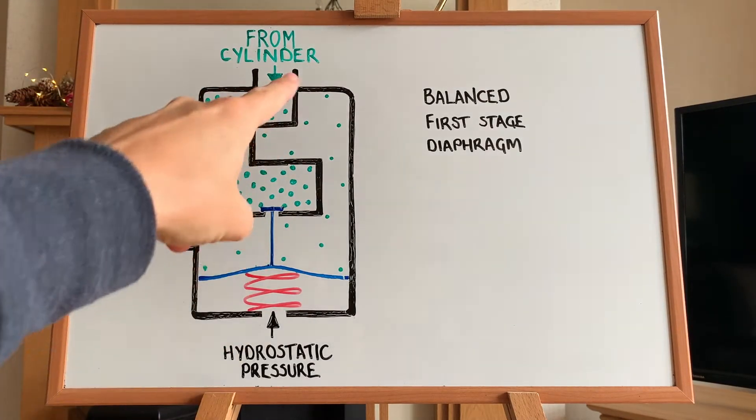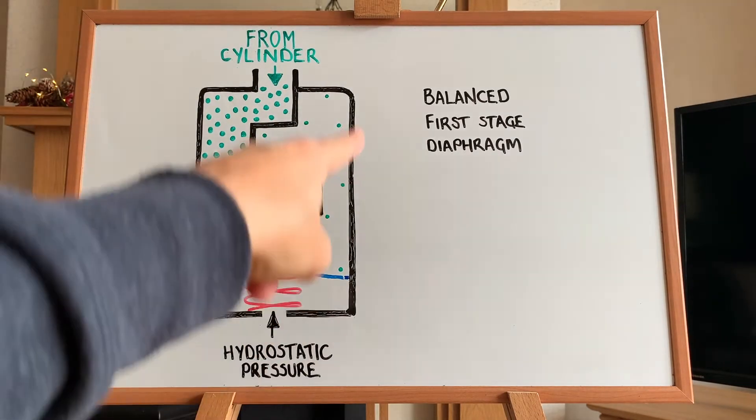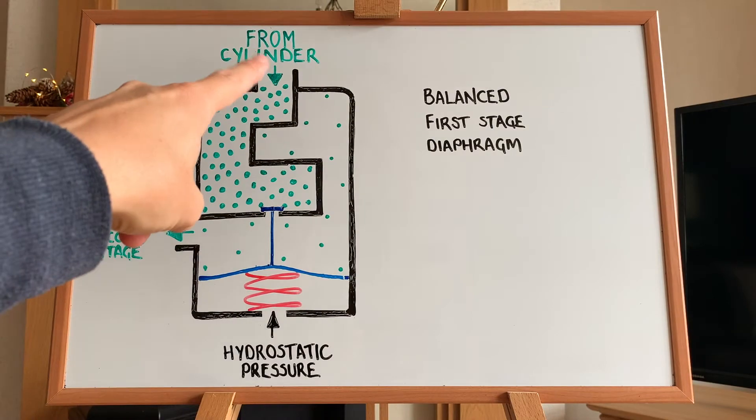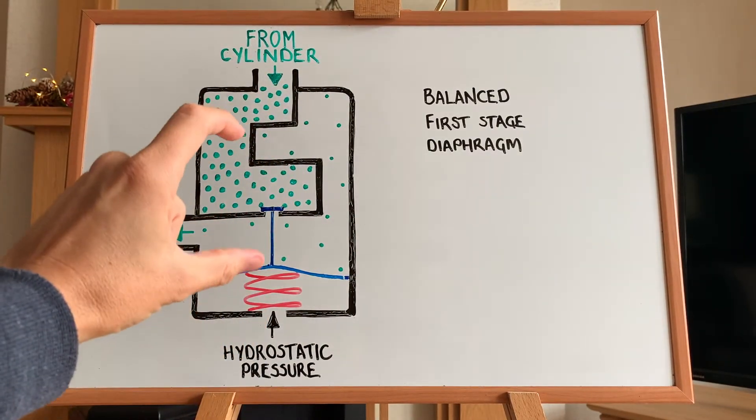The thick black lines, these are structural parts, so they're static, they don't move. This is the structure of the first stage. So these are the external walls and then we have a separation of the two chambers here.